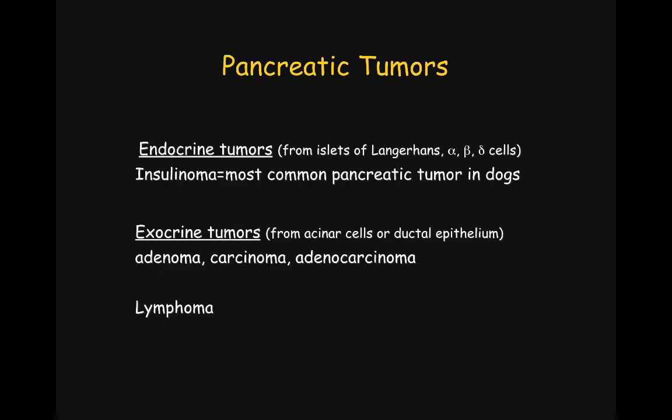The last segment of this lecture will be on pancreatic tumors. The endocrine tumors we are going to describe are primarily insulinomas, which are the most common pancreatic tumors in dogs. For exocrine tumors, we will discuss adenomas and carcinomas. There are of course other tumors that can infiltrate the pancreas, including round cell neoplasia such as lymphoma, but we won't describe them in the scope of this lecture.